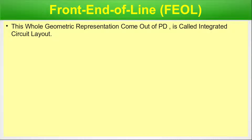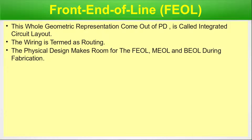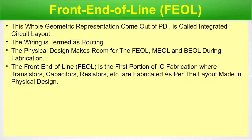Front end of line. This whole geometric representation coming out of physical design is called integrated circuit layout. The wiring is termed as routing. The physical design makes room for the FEOL, MEOL, and BEOL during fabrication. The front end of line is the first portion of the IC fabrication where transistors, capacitors, resistors, etc. are fabricated as per the layout made in the physical design.